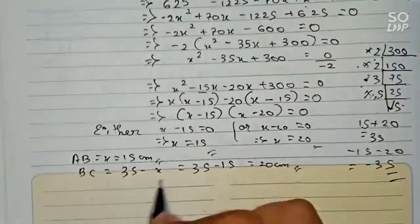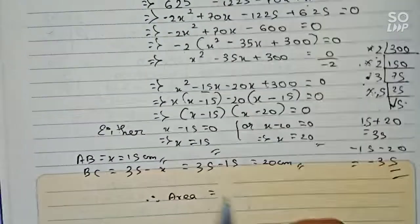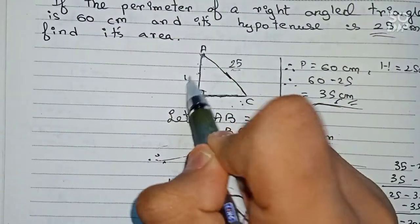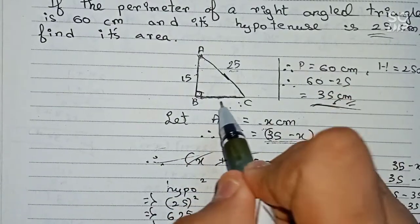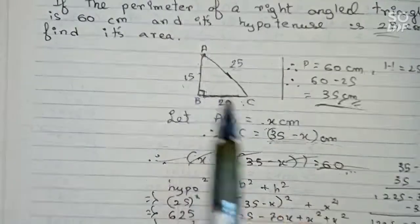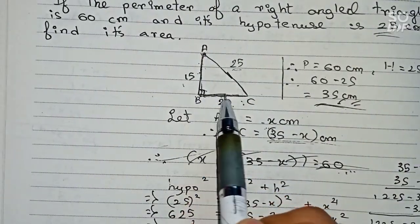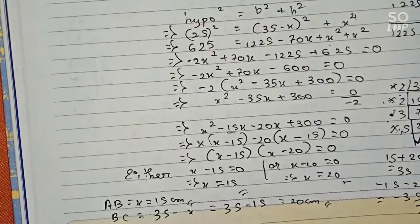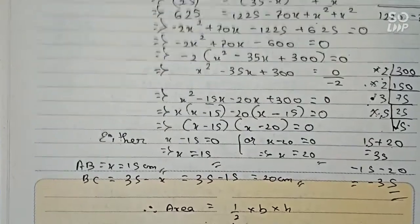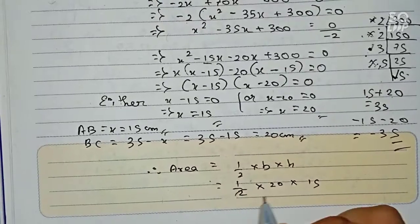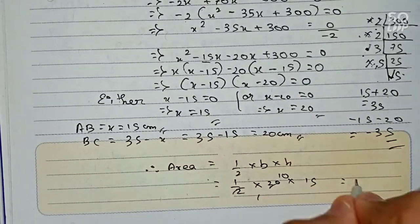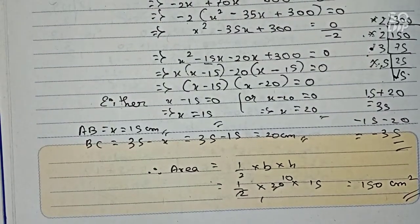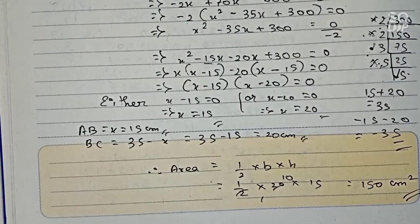In the question, we have to find the area. AB is 15 cm which is our height, and BC is 20 cm which is our base. Applying the formula: Area equals half times base times height equals half times 20 times 15. Cancelling 2 and 20 gives 10 times 15 equals 150 cm squared. So 150 cm squared is the final answer. Thanks for watching — please subscribe for more solutions.